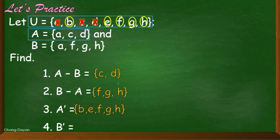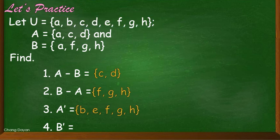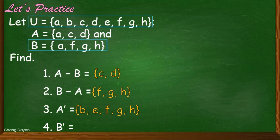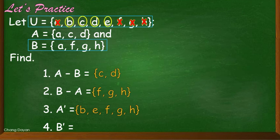Now let us have the last one, B prime. When you say B prime, we have to get the elements which are present in the universal set but not in set B. So we exclude A, F, G, and H. The remaining elements will be the answer, so B prime is equal to B, C, D, E.